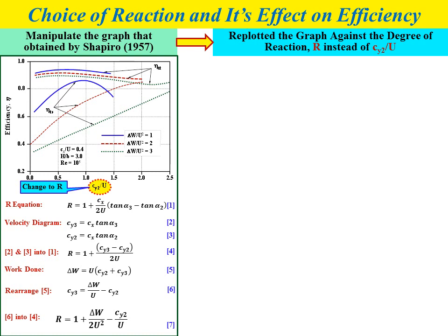In this equation, the degree of reaction involves the parameter of stage loading factor (delta W divided by U squared) and also Cy2 divided by U. Clearly from equation number 7, if we substitute the value of Cy2 over U from the Shapiro graph and also the value of stage loading, we will get the value of degree of reaction R. Using equation number 7, we can change the value of Cy2 over U in the Shapiro graph to degree of reaction values.